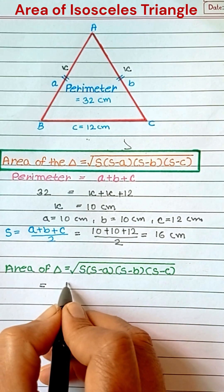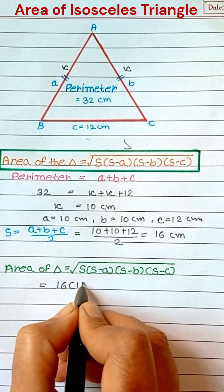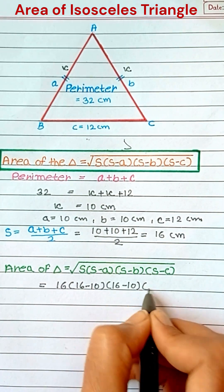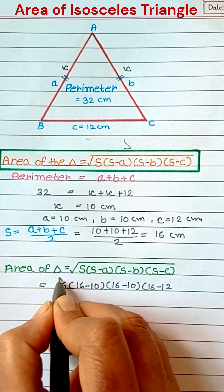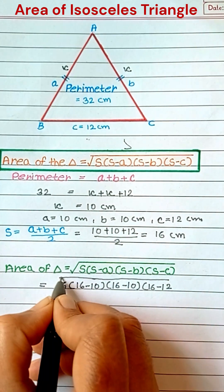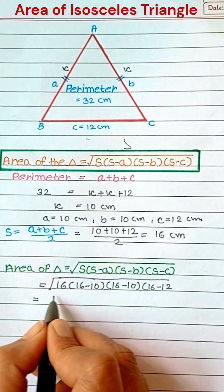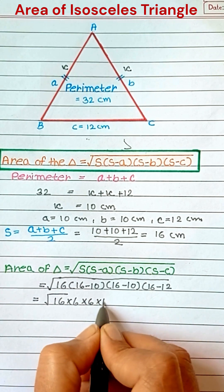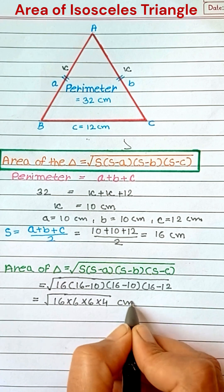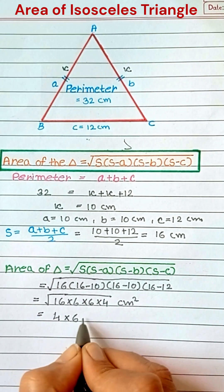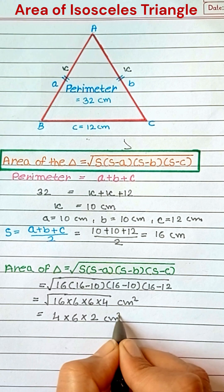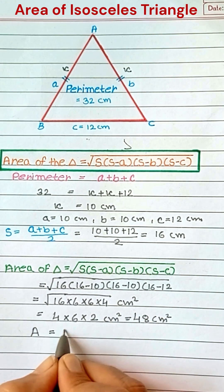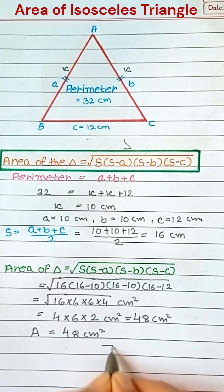Put all values into the formula for the area of an isosceles triangle. The area is 48 cm squared.